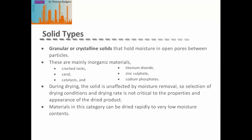For drying, solid materials are classified into two types. The first is granular or crystalline solids, where moisture is held in open pores between particles — including inorganic materials like crushed rock, sand, sodium phosphates, or catalyst materials. During drying, the solid is unaffected by moisture removal, so drying conditions are not critical to product properties. Because of the open pore structure, moisture moves easily to the surface, and these materials can often be dried rapidly to very low moisture contents.